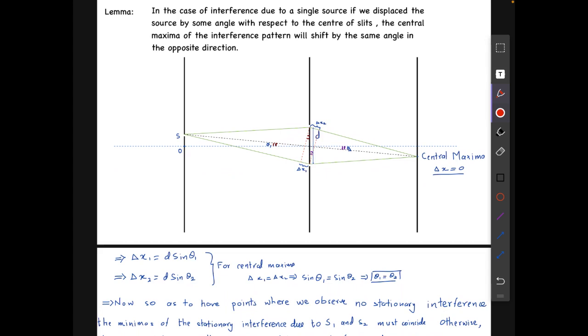To prove this, let's assume we have a source S and the slit distance between the slits is d. Let's say we have the central maxima here. By the definition of central maxima, the path difference should be zero. If we look at path differences here, the lower ray will travel a distance of delta x1 more in this part and the upper ray will cover a distance of delta x2 in this part.